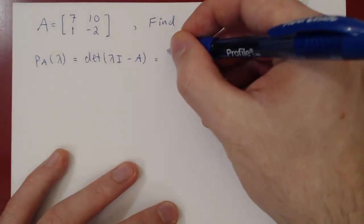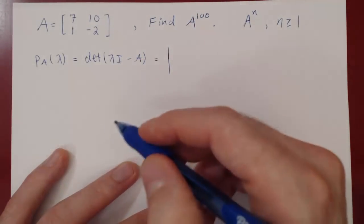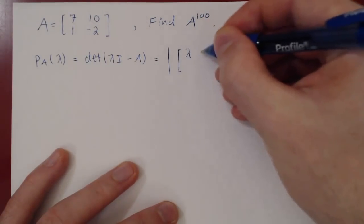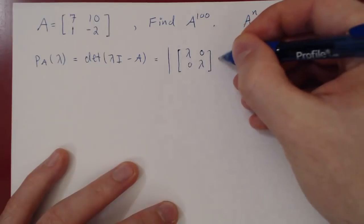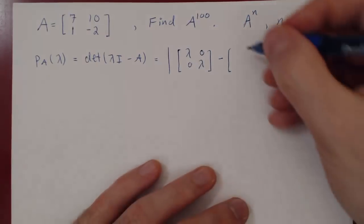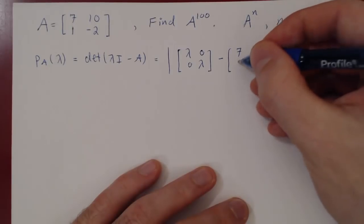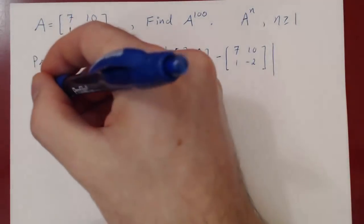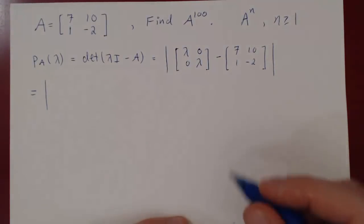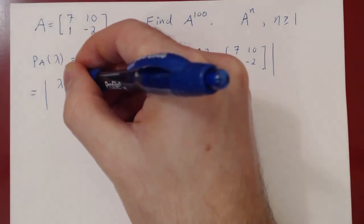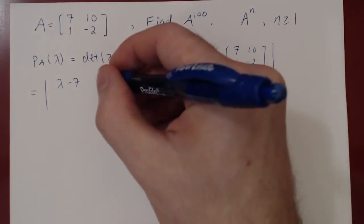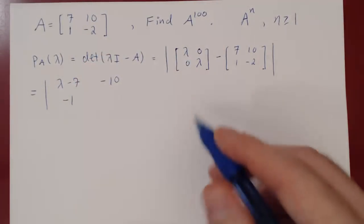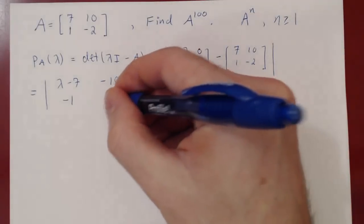The determinant of λI minus A — since A is 2 by 2, I will also be 2 by 2, so λI is the matrix [λ, 0; 0, λ] minus the matrix A, which is [7, 10; 1, -2]. This gives the determinant of [λ-7, -10; -1, λ+2].